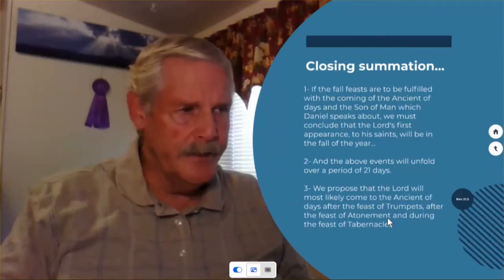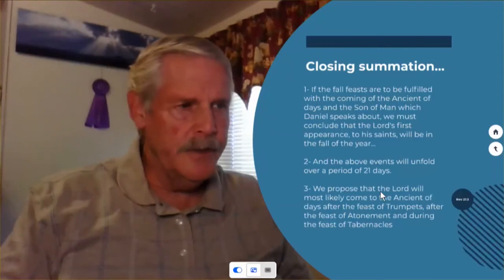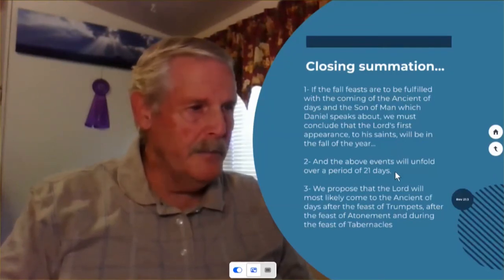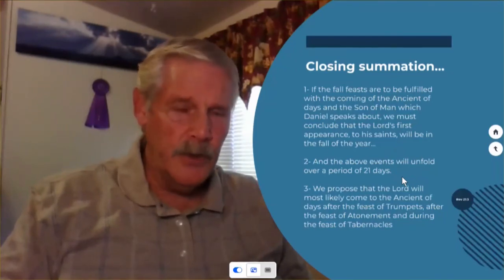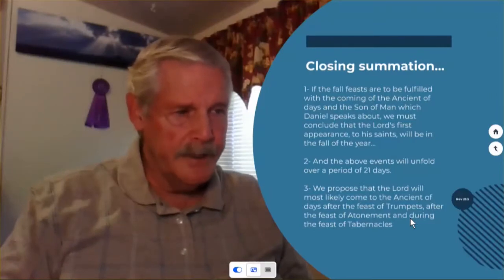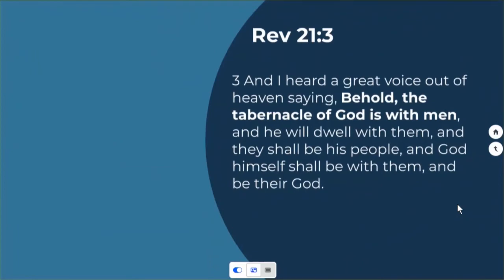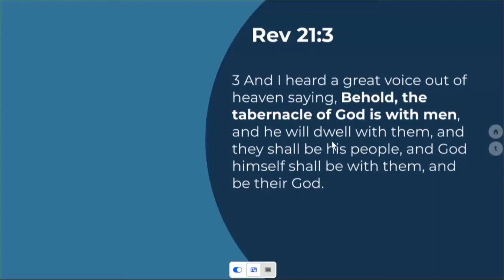To summarize: if the fall feasts are to be fulfilled with the coming of the Ancient of Days and the Son of Man that Daniel speaks about, we must conclude that the Lord's first appearance to his saints will be in the fall of the year. The above events will unfold over a period of 21 days. We propose the Lord will most likely come to the Ancient of Days after the Feast of Trumpets, after the Feast of Atonement, and during the Feast of Tabernacles. As evidence, Revelation 21:3 says: 'Behold, the tabernacle of God is with men, and he will dwell with them, and they shall be his people, and God himself shall be with them and be their God.'